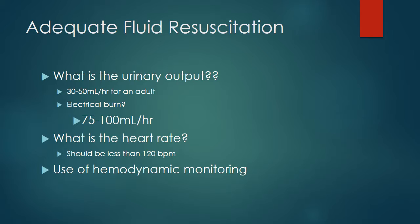Remember from the PowerPoint on burns that we have a permissive tachycardia — a heart rate up to 120 is considered normal for the burn patient. Once their heart rate gets to 120 or below, we can start making the decision that we are reaching adequate fluid resuscitation. Heart rate less than 120 combined with adequate urine output — 30 to 50 mLs an hour in an adult, or 75 to 100 mLs an hour for an electrical burn — indicates that our patient has received adequate fluids.